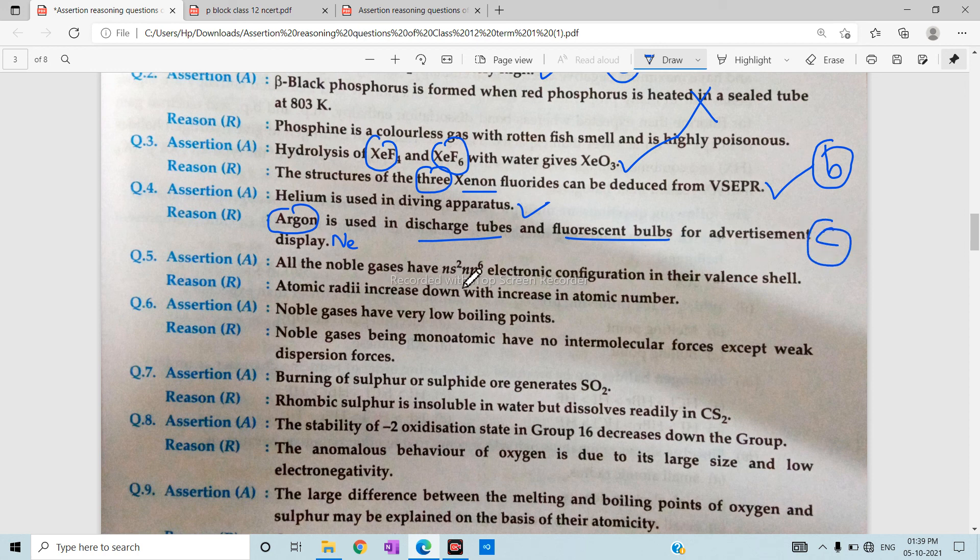Then, all the noble gases have ns2 np6 configuration. Atomic radii increases down the group with increase in atomic number. Again, the explanation: noble gases being monoatomic have no intermolecular forces except weak dispersion forces. And this is the right explanation, so this answer will be A.